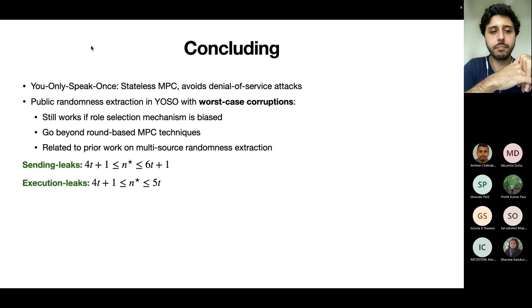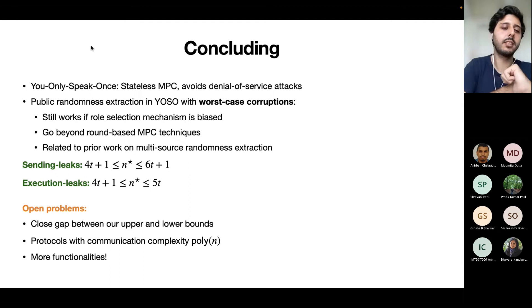In terms of results: for sending leaks we get a protocol handling T corruptions with 6T+1 roles, corruption rate one over six. For execution leaks, corruption rate one over five with 5T roles. The impossibility shows you cannot exceed one over four corruption rate. Open problems include closing the gap between positive and negative results, getting efficient protocols, and handling adaptive corruptions.